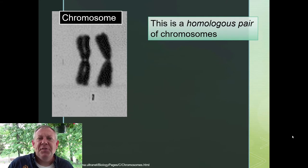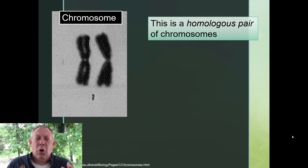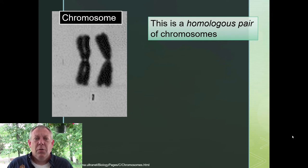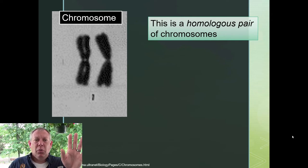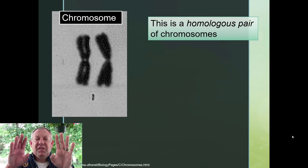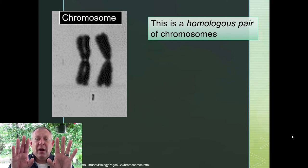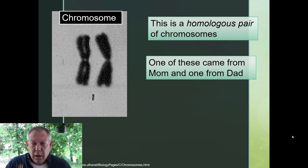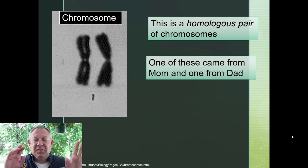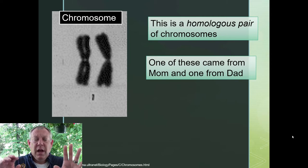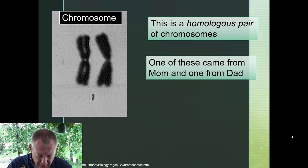When we talk about meiosis, we talk about the fact that chromosomes can pair up into what are known as homologous pairs. Every chromosome does not exist on its own — every chromosome exists as one of a pair, called a homologous pair. The reason they act as a pair is because you've got one from your mother and one from your father, and those always pair up.